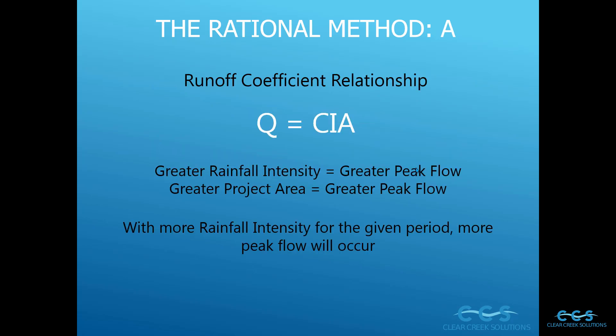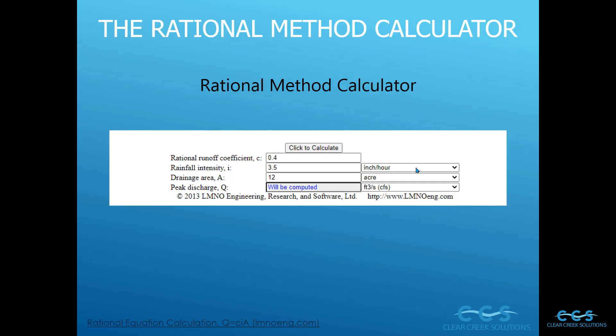With greater rainfall intensity we're going to have greater peak flow. This makes sense because with more intense rainfall we're going to have more runoff from a site, and with a greater project area encompassing more area and gathering more rainfall we're also going to get a greater peak flow. So with more rainfall intensity for a given period, more peak flow will definitely occur.